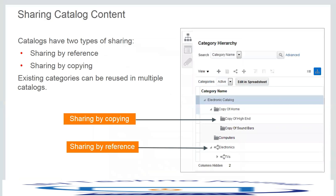This screenshot shows two ways to share catalog content: sharing by copying and sharing by reference. The catalog sharing feature allows the reuse of categories and a category hierarchy across catalogs.